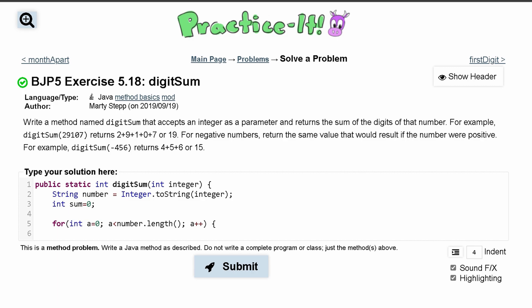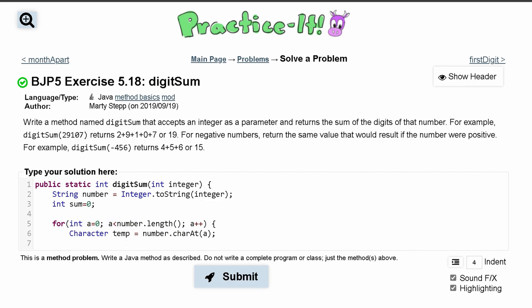Inside of here we want to make something that will store our temporary character. It's going to be a type character - we're going to do Character, we'll call it temp, and we're going to set it equal to the character at the specific index that we're looking at. The specific index is going to be determined by your a. Remember it increments every single time. So we're going to do number.charAt to get the specific character at this index, and then we store it in temp. So we have our number, and this for loop is going to go through every index of it, and we're going to get the character at each part and store it in temp.